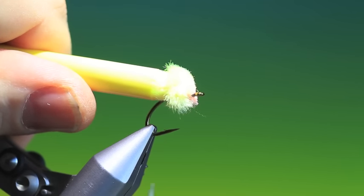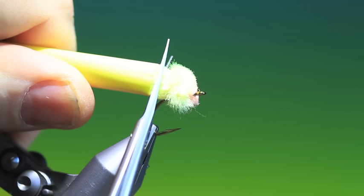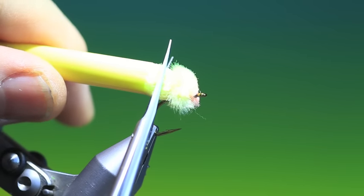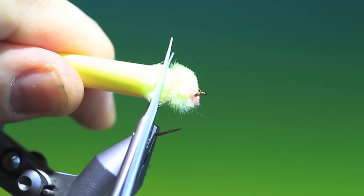Then we pull just a little way out. Don't cut yet, otherwise you won't get your Glowbug yarn out of the tube for the next one. So just pull that far. And then we cut.